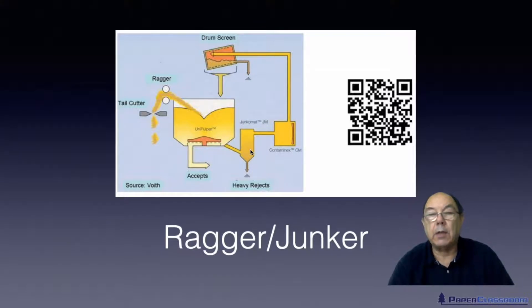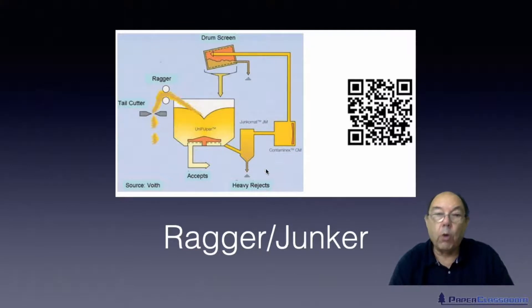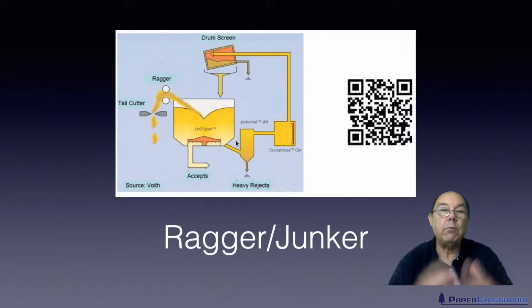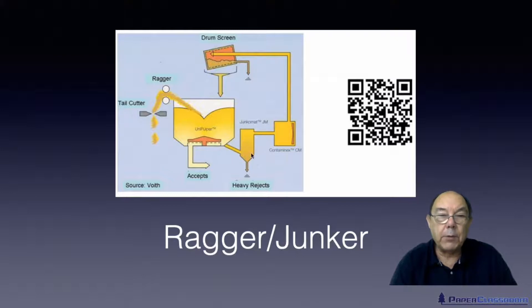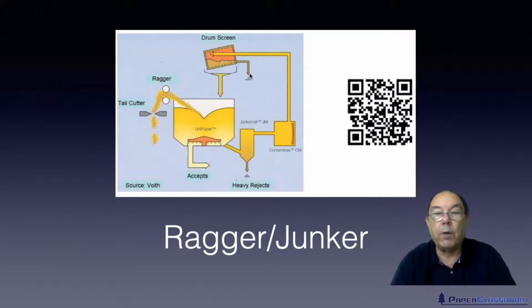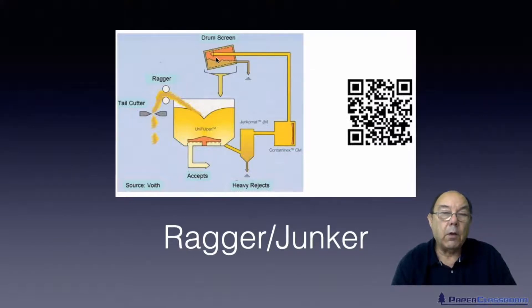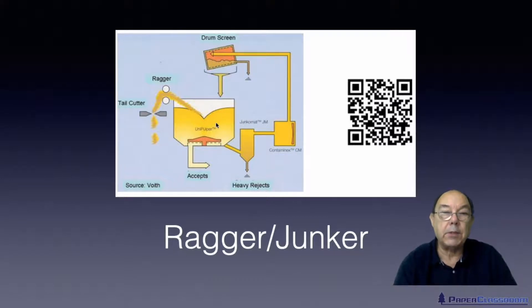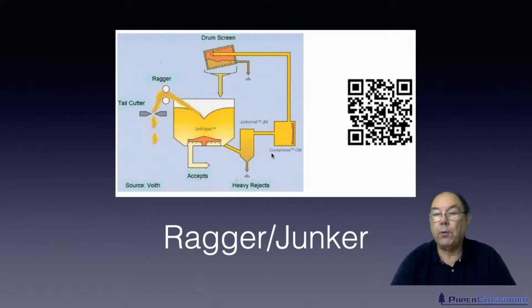The heavy metal and stone objects will settle to the bottom, and regularly an operator will open a little door and clear it out. The smaller floating contamination - mainly plastic-type material - will come up into a drum screen. The drum screen will catch most of the large plastic material, which will go off to a skip as a reject line. Because it's a perforated screen, all the remaining useful fiber will come back in and go through the accepts line, or recirculate around the system until it eventually does go through the accepts line.